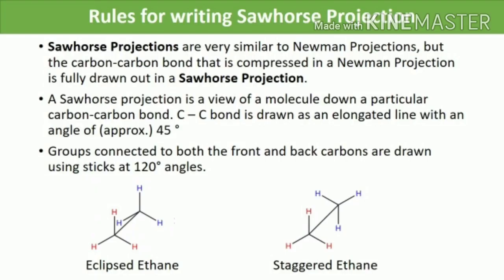Let us summarize the rules for writing Sahar's projection. Sahar's projections are very similar to Newman projections, but the carbon-carbon bond that is compressed in Newman projection is fully drawn out in Sahar's projection. A Sahar's projection is a view of a molecule down a particular carbon-carbon bond. The carbon-carbon bond is drawn as an elongated line at an angle of approximately 45 degrees, and groups connected to both the front and back carbons are drawn using sticks at 120 degree angles.